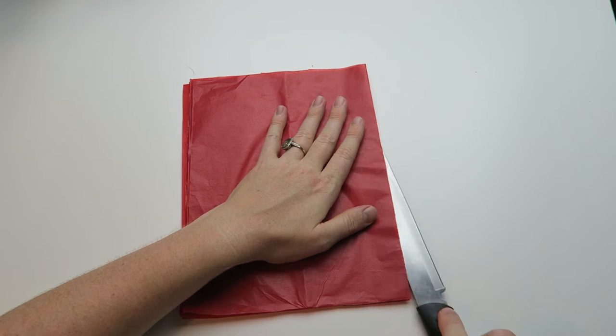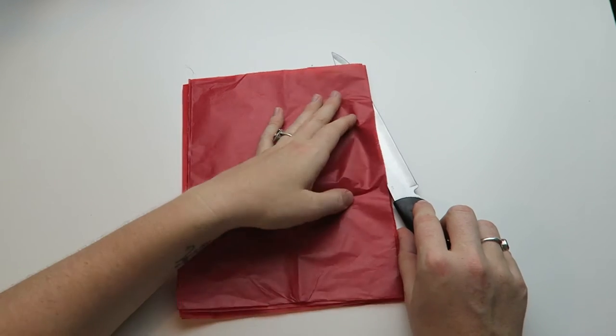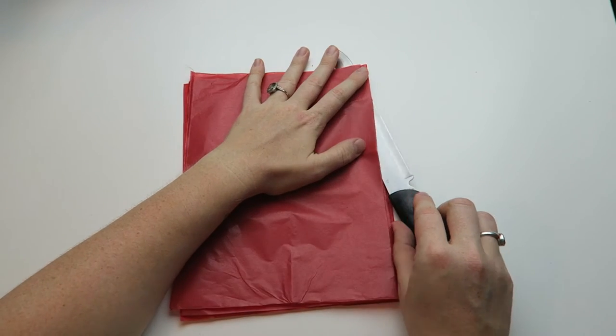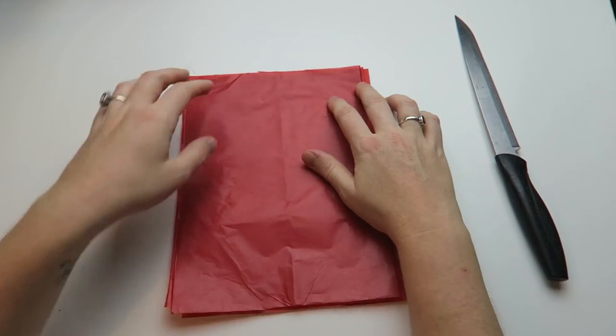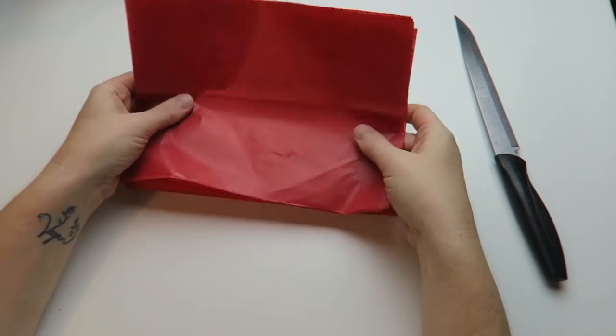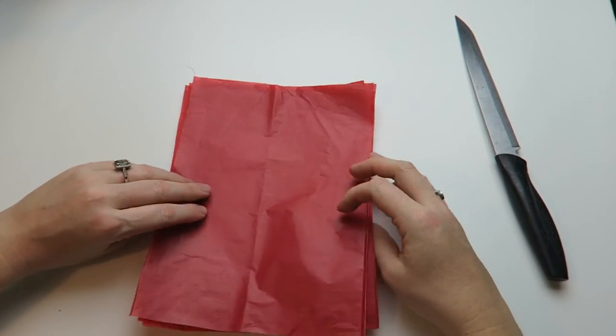So now we have four rectangles, and once we fold those in half again and cut them once again, then we have our eight rectangles for the eight pointed star.